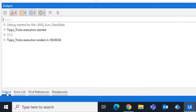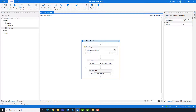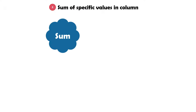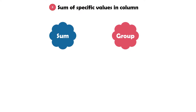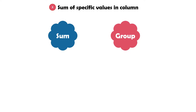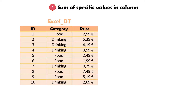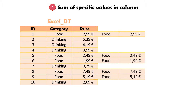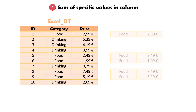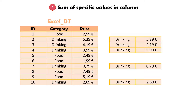In this part of the video I want to show you how to use the sum function with the group function. It means I want to calculate only specific values from a column using criteria from another column. Let's explain it using an example. I have the same table again. The second column contains different values: food and drinking. I want to get the sum of all rows for the food category, and then the sum of all rows for the drinking category.